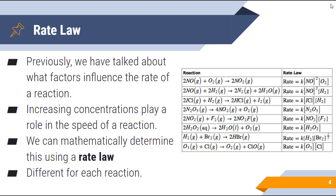Let's talk a little bit about rate law. Previously we've talked about what factors influence the rate of a reaction. We know that temperature influences the rate of reaction, the addition of a catalyst influences it, and concentration influences it. That's what we're really going to focus on today — concentration. By increasing concentrations, they play a role in the speed of a reaction: the more concentration is present, the more collisions that happen, and therefore the faster the reaction takes place.